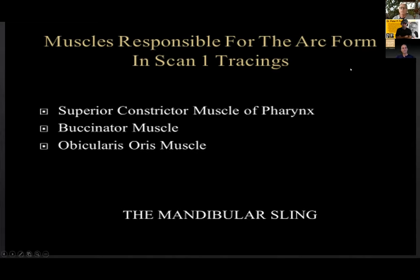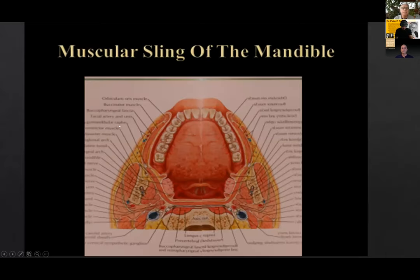What's responsible for this muscular controlled sweeping arc movement is called the mandibular sling. Dr. Roccobato has gone into this — he really drove it into my head. You have the superior constrictor muscle of the pharynx, which is connected to the buccinator muscles through the pterygoid raphae, and then you have the orbicularis oris muscle. This is the sling in a cross-section.